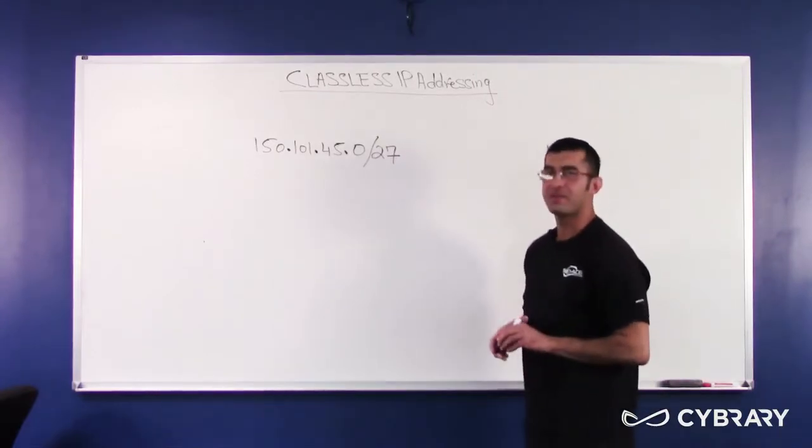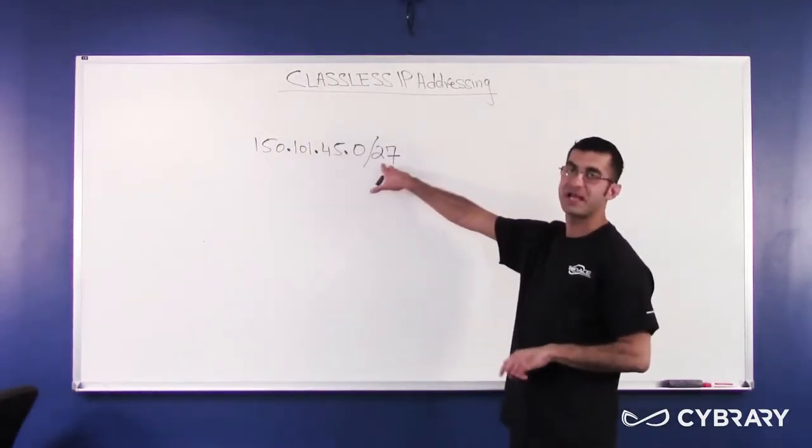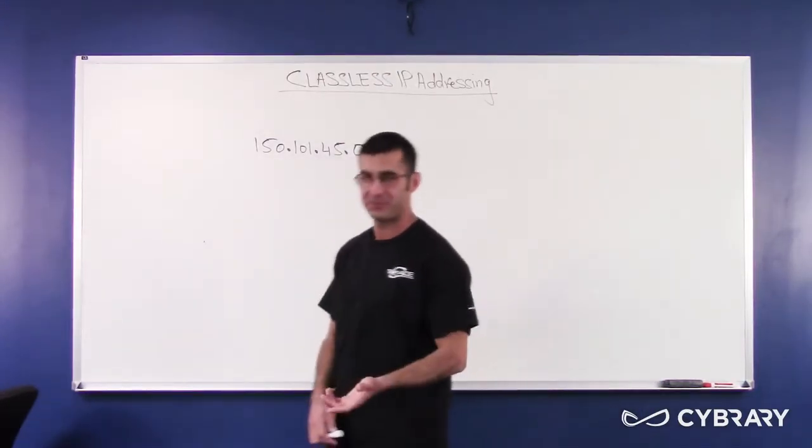Well, the first thing I want to find out is, what would the mask look like in dotted decimal? This is the CIDR notation, the slash format. What would the mask look like? What would it be? 255, 255, 255, something, right?